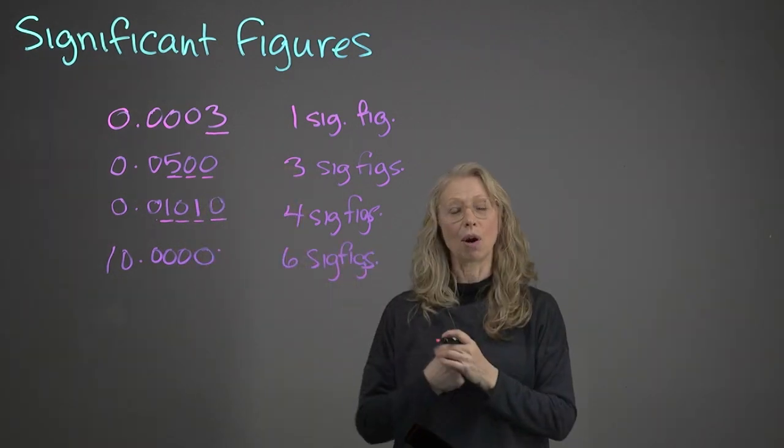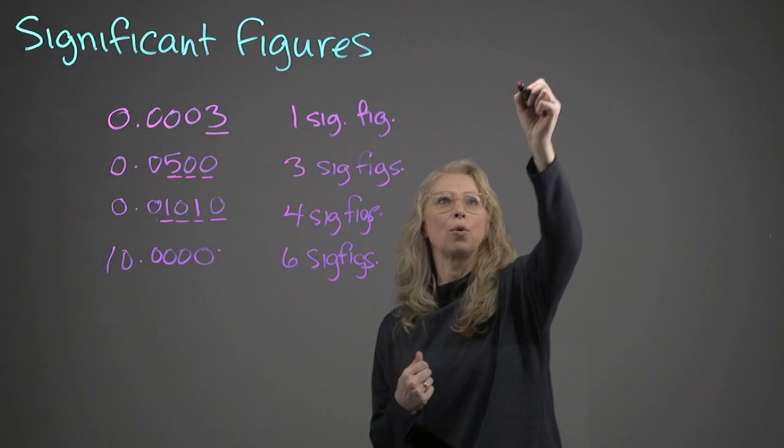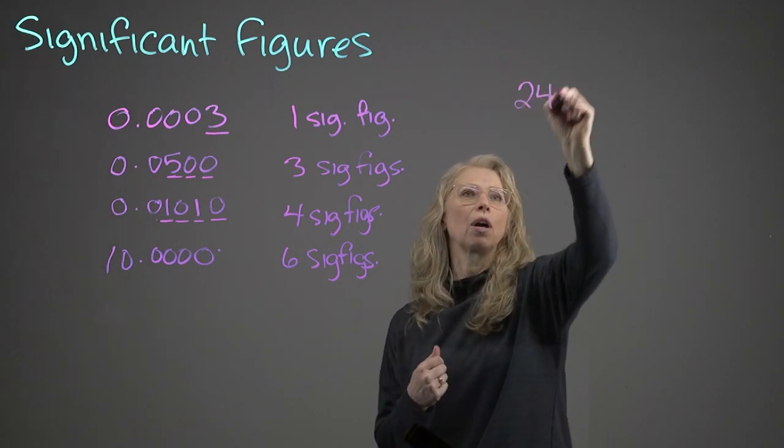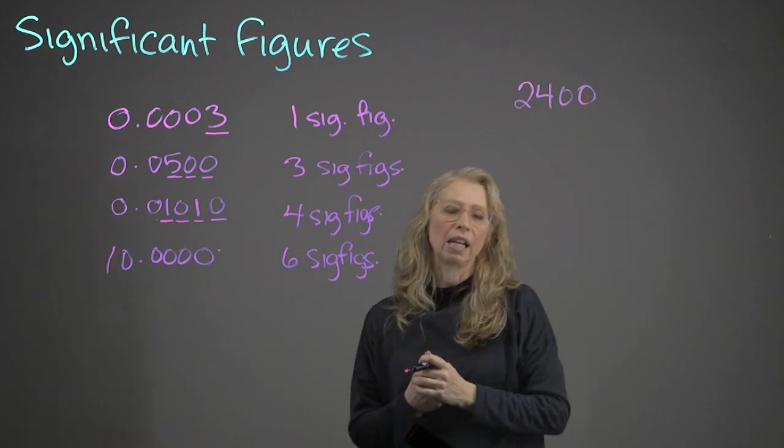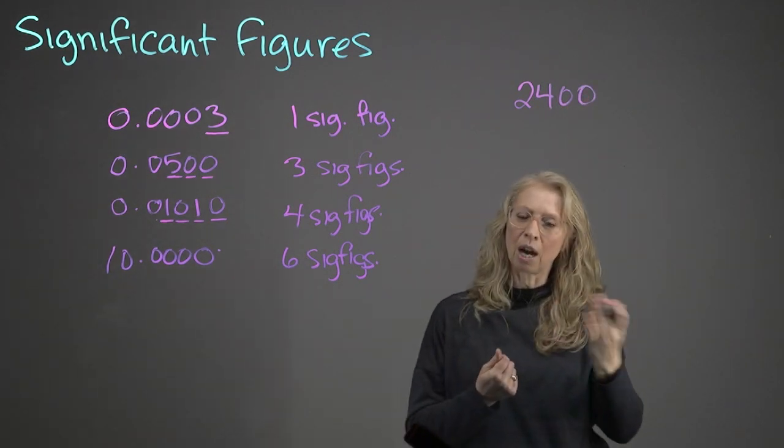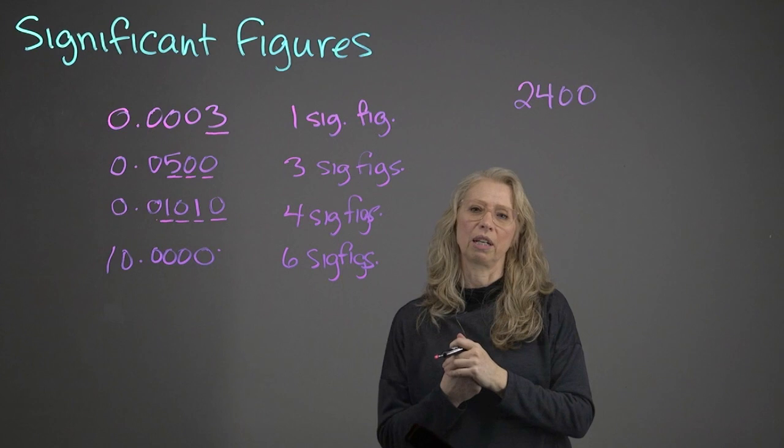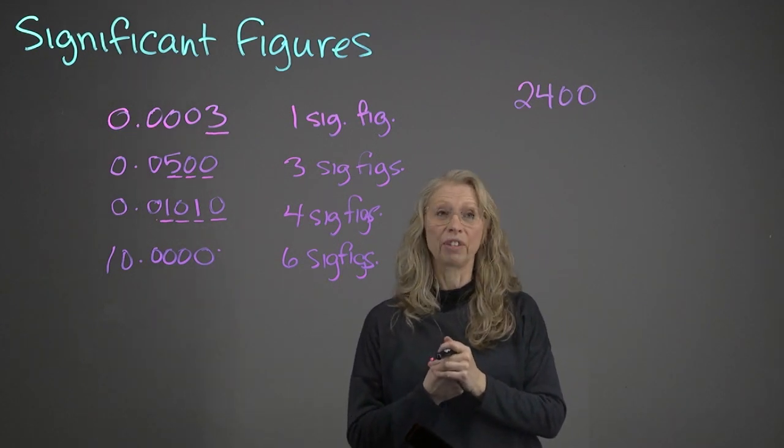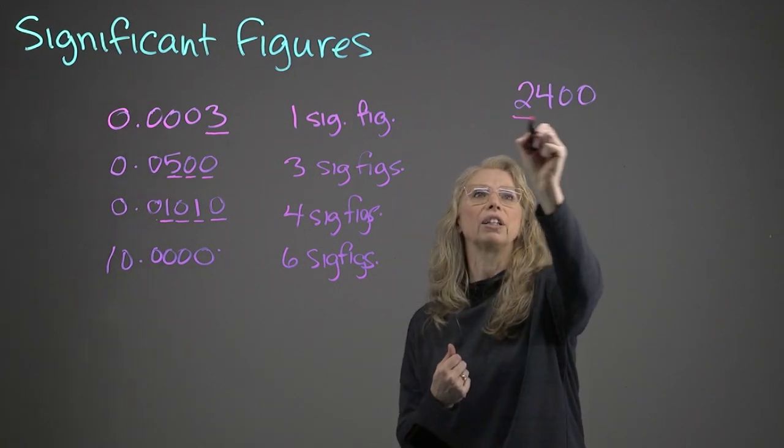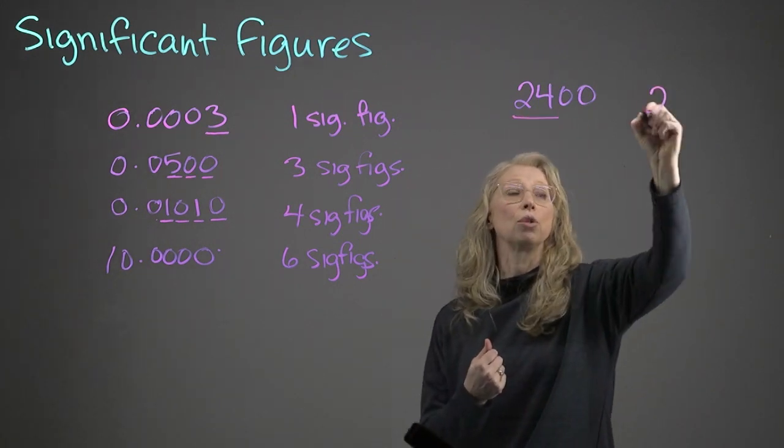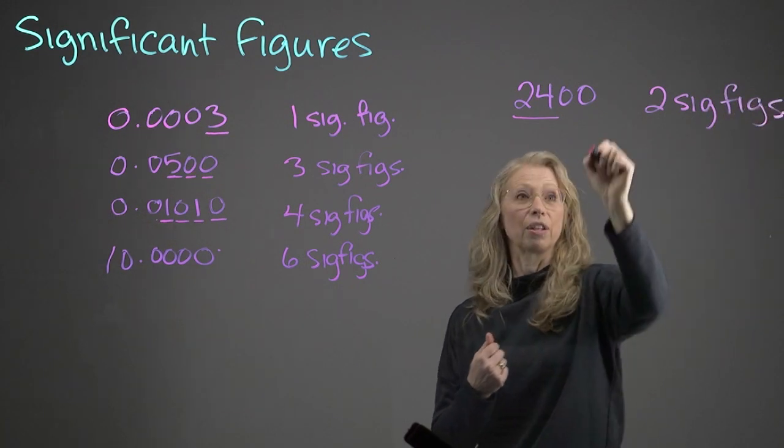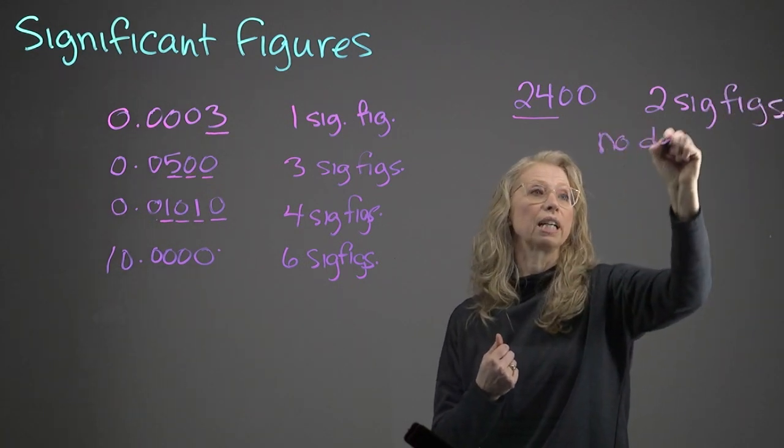What about a whole number? So whole numbers can be ambiguous. If I say 2,400, is the value exactly 2,400, or is it approximately 2,400? Without a decimal place, we can only, with confidence, say that this value has two sig figs, because there's no decimal place.